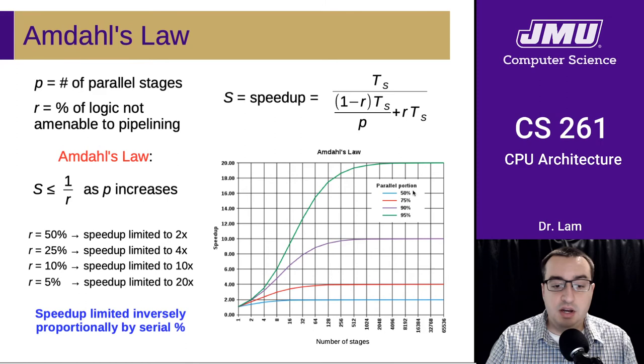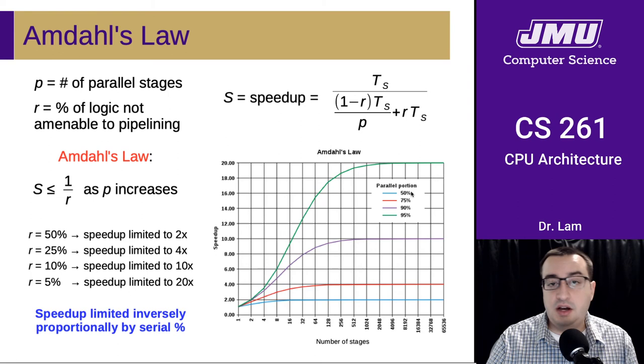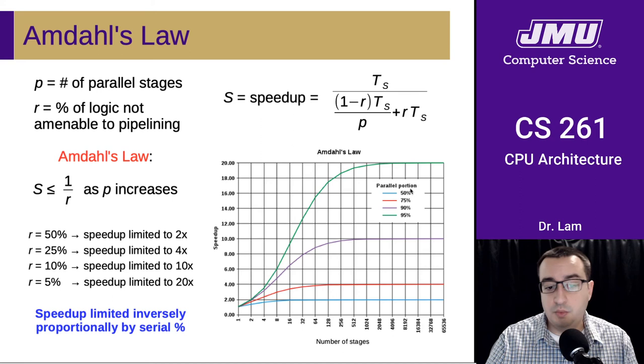So this is the parallel portion. This is kind of 1 minus R. So if half of the program can't be parallelized, meaning the other half can, then Amdahl's law says that our theoretical speedup is limited by 1 over 50% or 2. So the maximum speedup is 2x, which means that the best we can do is improve our program by 2x.